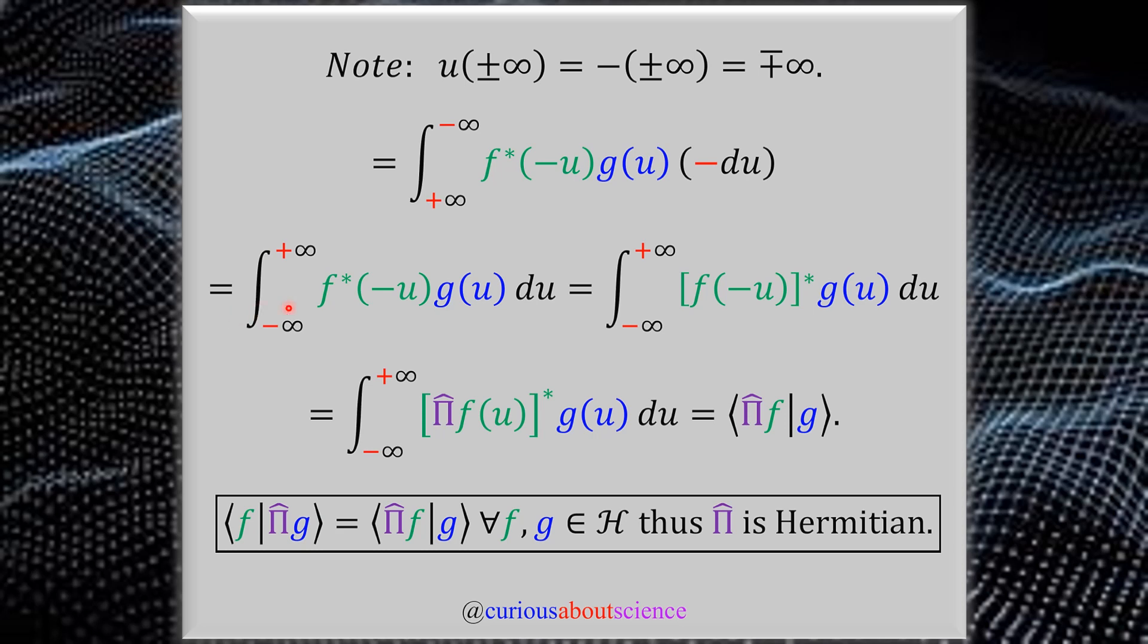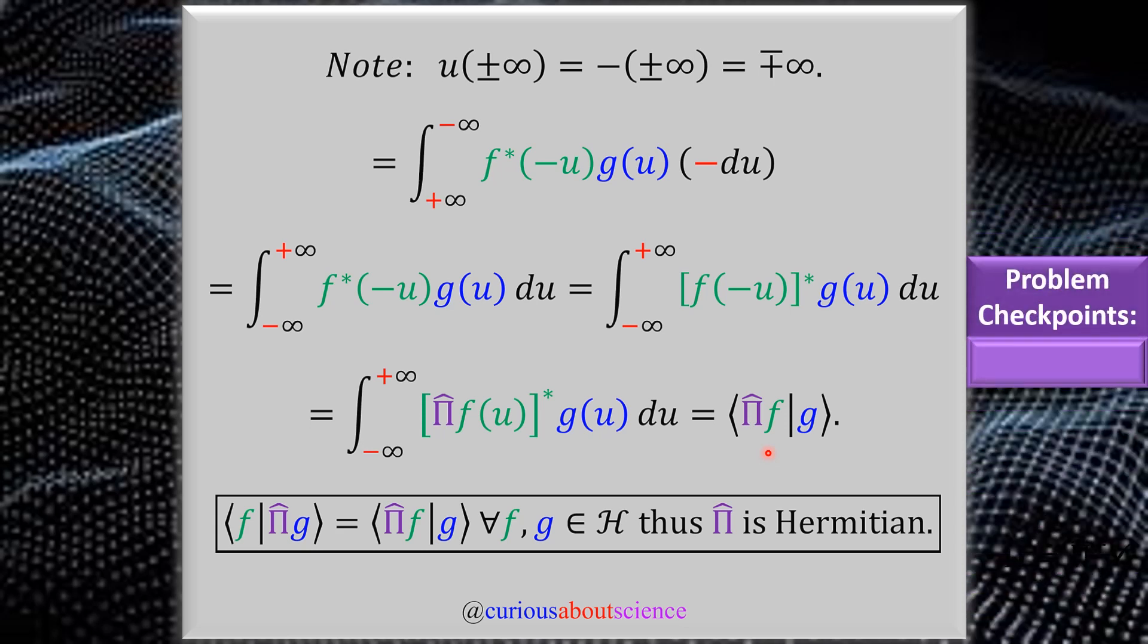We end up with f star of negative u times g of u, which we can write the conjugate on the outside. Therefore what we see is f of negative u gives us the parity operator on f of u. This is the same definition of the inner product but with the parity operator acting on f. Therefore we show that ⟨f|Π̂g⟩ = ⟨Π̂f|g⟩ for all f and g in the Hilbert space.